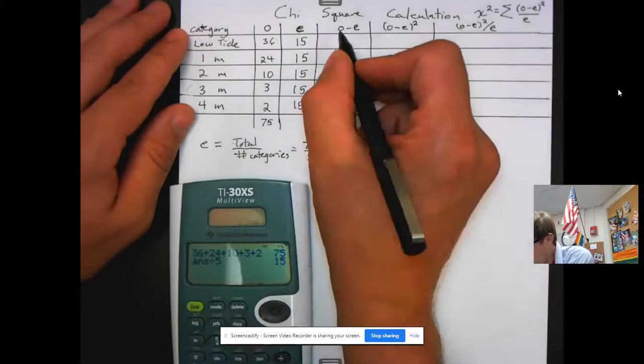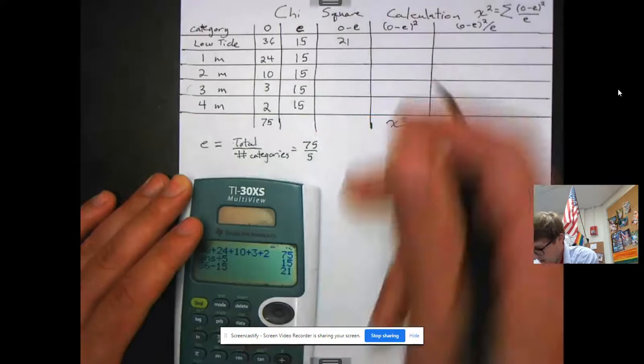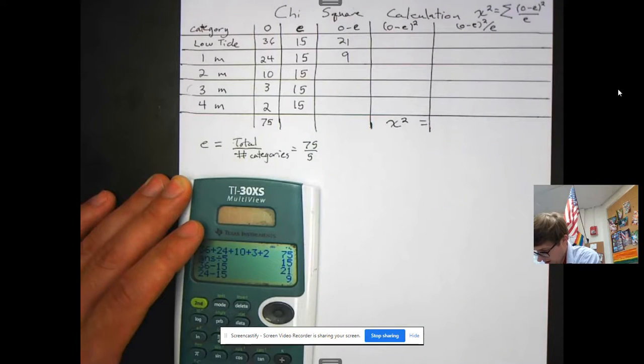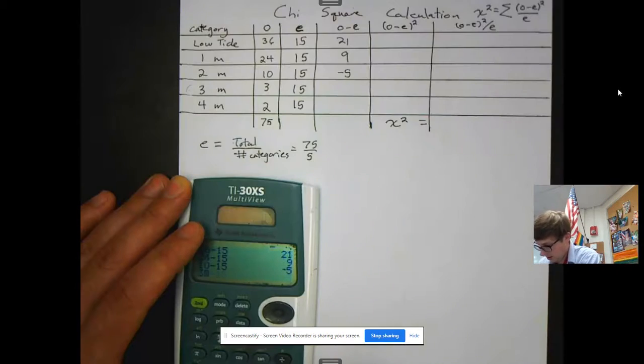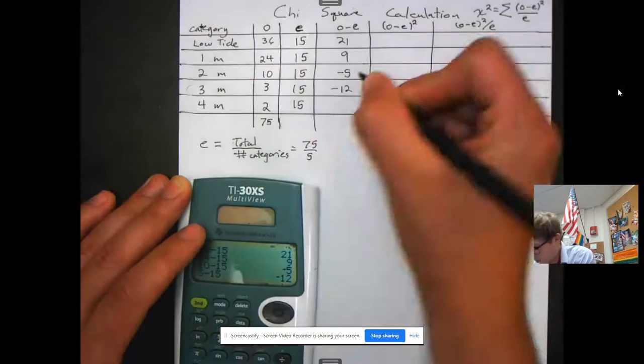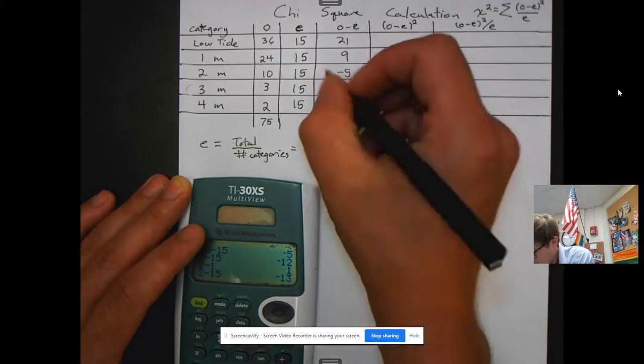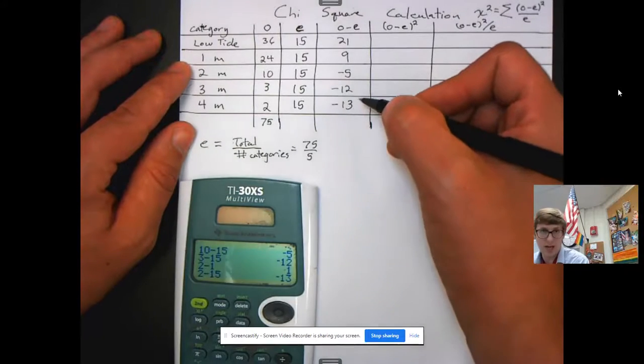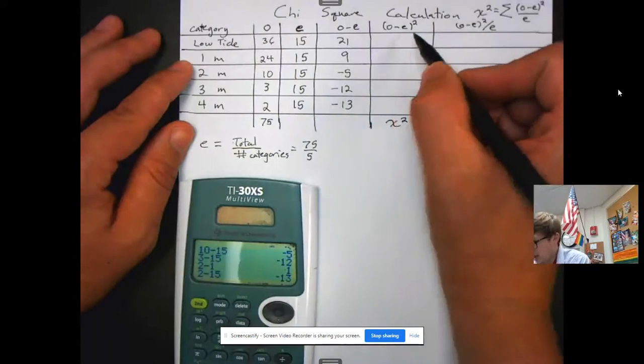Then, we need to find the difference between those. So, that's 36 minus 15, 21, 24 minus 15, 9, 10 minus 15, negative 5, 3 minus 15, negative 12, and 2 minus 15, negative 13. You could probably do that in your head, but I did it anyway. Now, some of these are negative numbers. If we add negative numbers, we might get a smaller number, which is not what we want for the test. That's why we square it to get rid of these negatives, essentially.